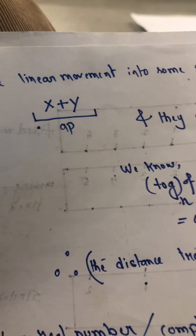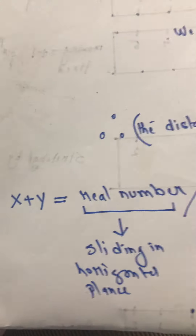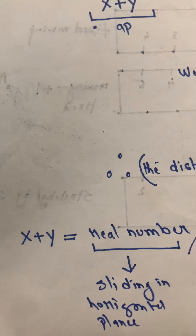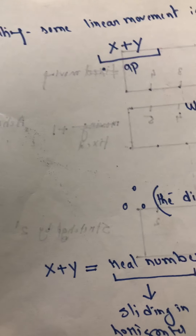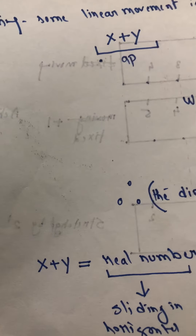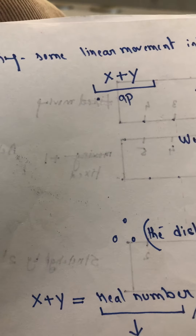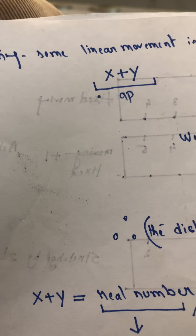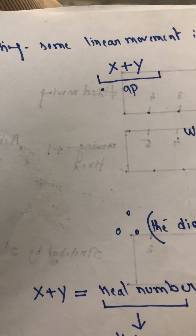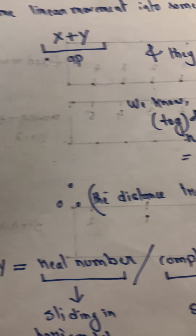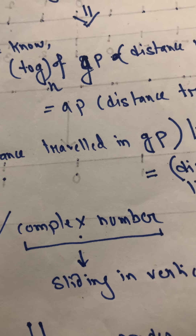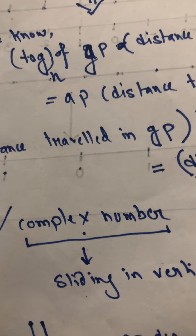Using this basic concept, I will try to figure out why this makes sense intuitively. So if there is some linear movement — an AP — that linear movement could take place along the real number line or it could take place along the complex number line.